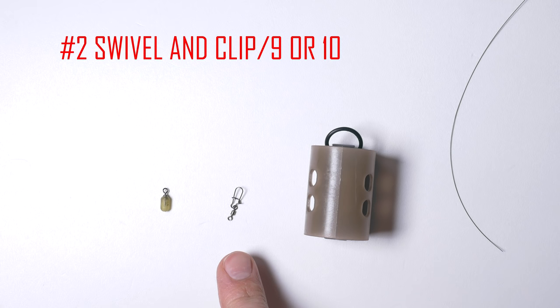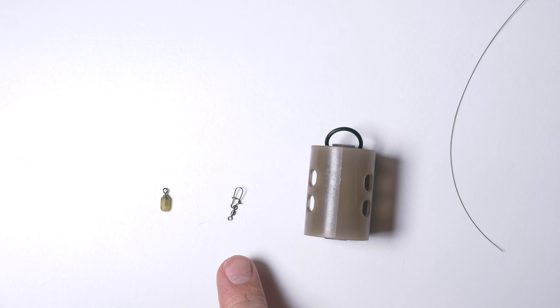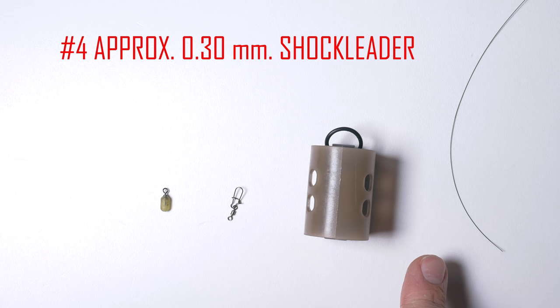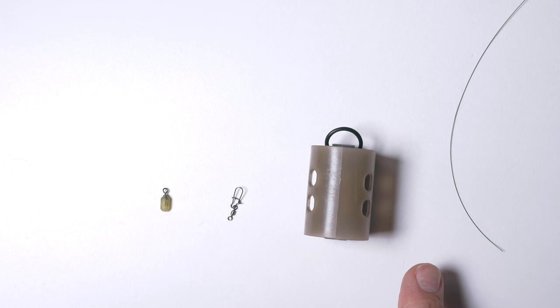Swivel with clip in size 9 or 10. Feeder of choice. Shock leader or main line made of monofilament or fluorocarbon line of around 0.30 mm diameter.